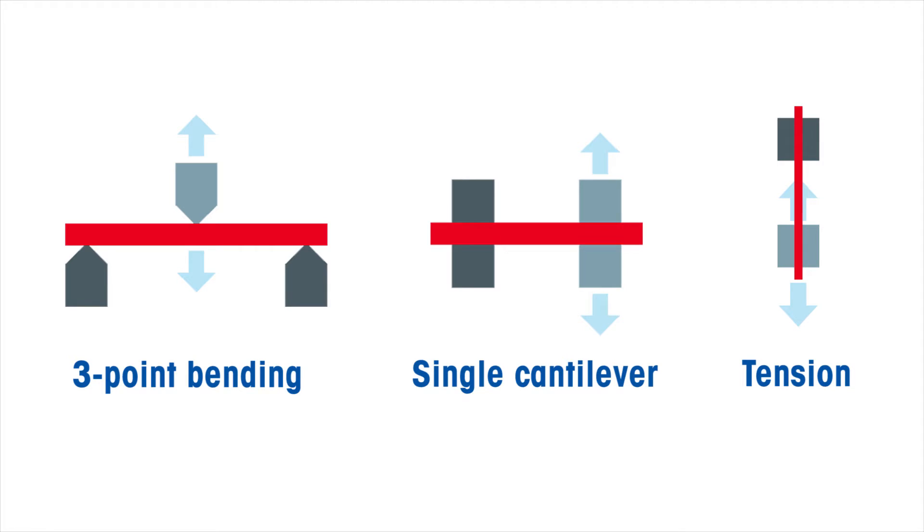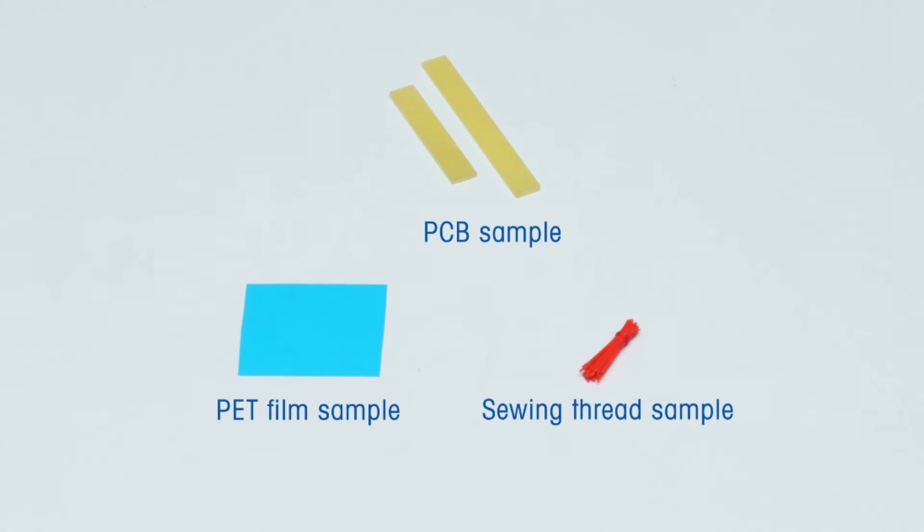Today, we will show you DMA sample preparation for the more commonly used modes: 3-point bending, single cantilever, and tension. For the 3-point bending mode and single cantilever, we will make use of printed circuit board as the sample. For tension, we will use a polyethylene terephthalate film with a thickness of 0.18 micrometer. In the fluid bath, we will use sewing thread in tension mode.